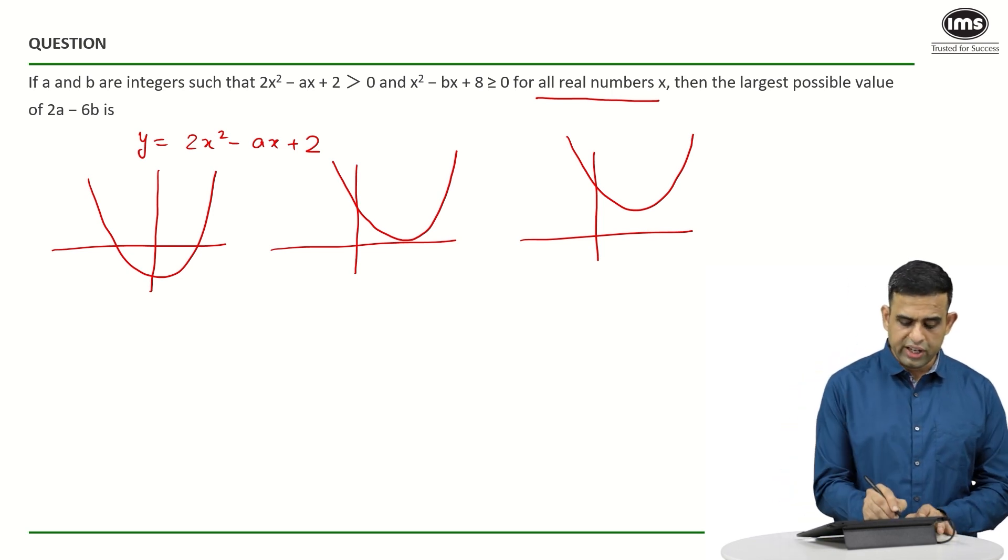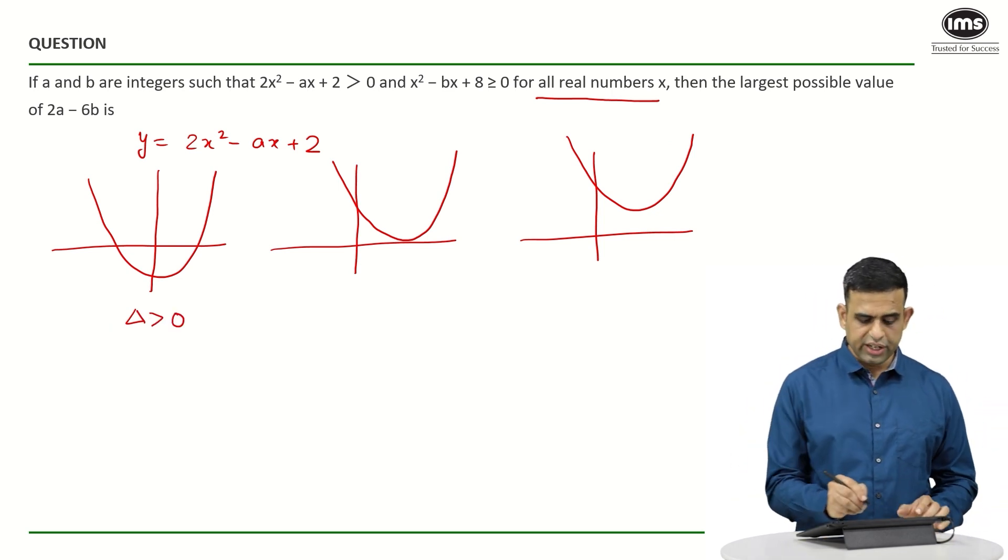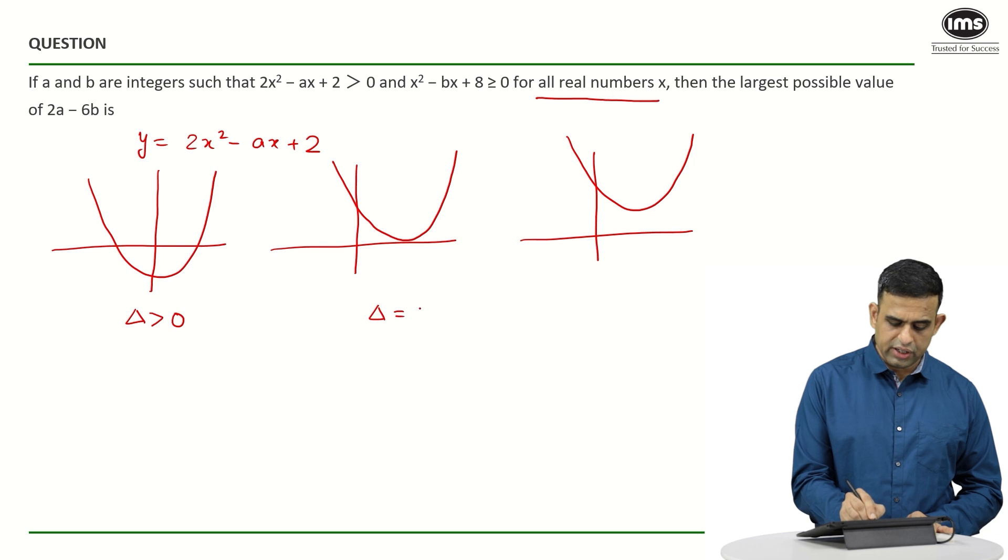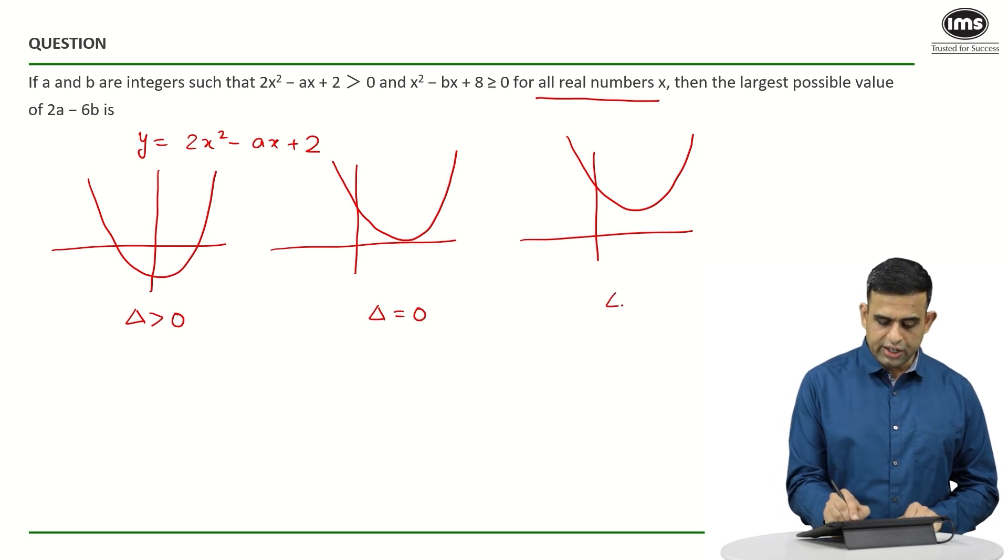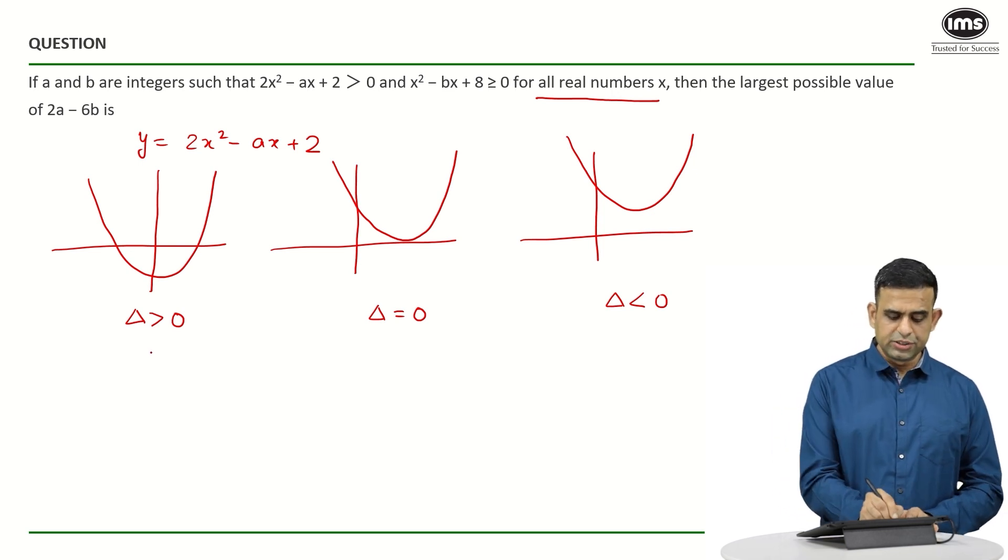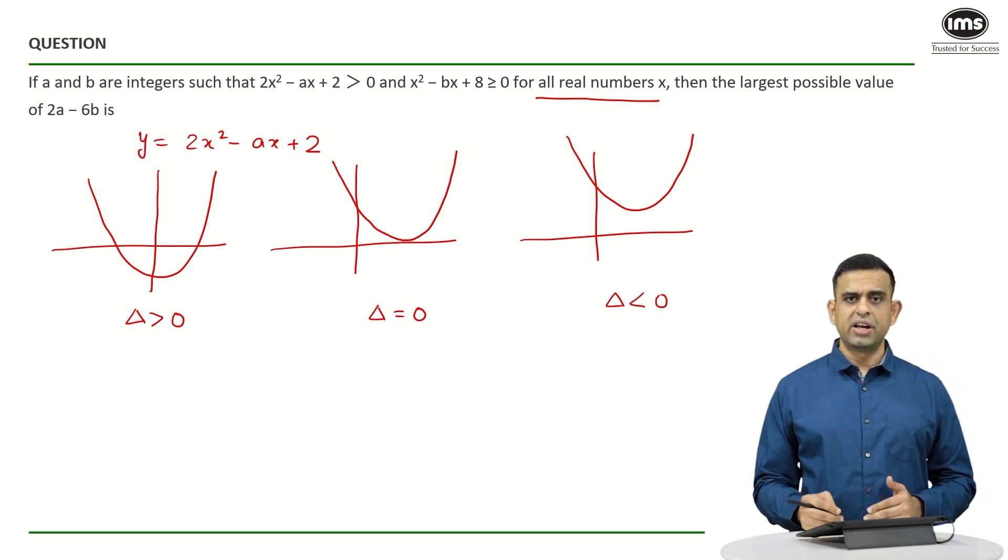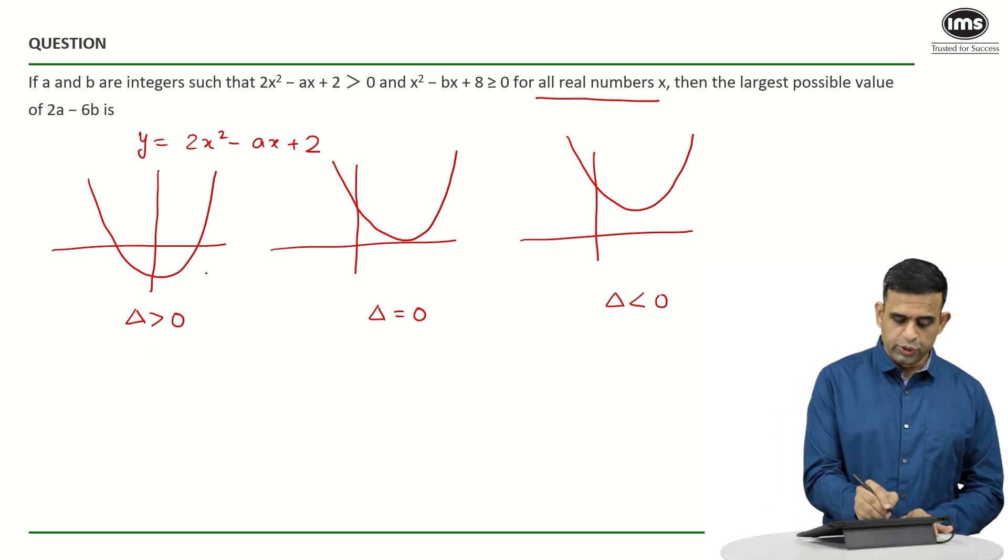we have two distinct roots and we can say this case can happen when delta or discriminant is positive. In the second case, one can say the delta is actually equals to 0. In the third case, one can say delta has to be less than 0. Now look at the first case over here. In this particular scenario, can we say here the value of y can also be negative between the two roots. So in this particular case, this case can be ruled out.